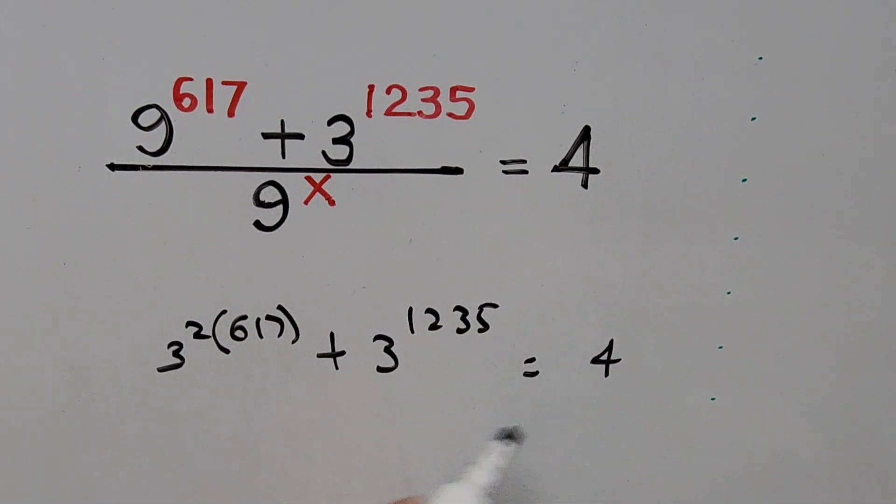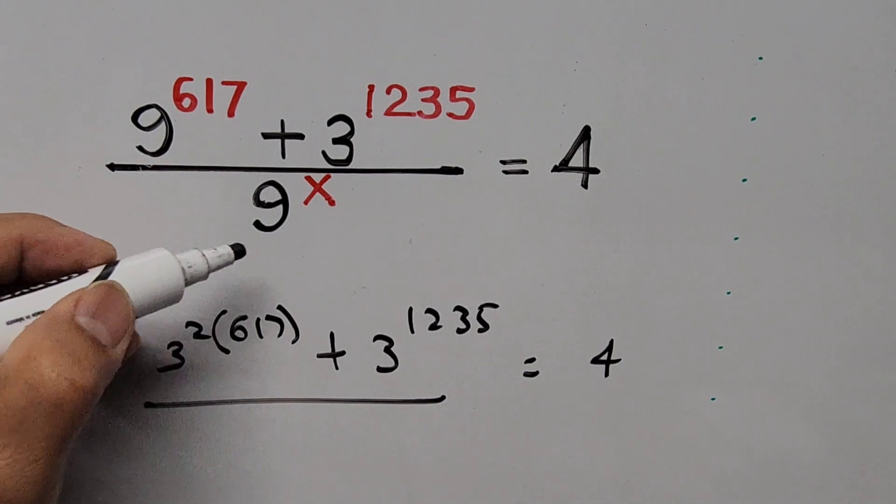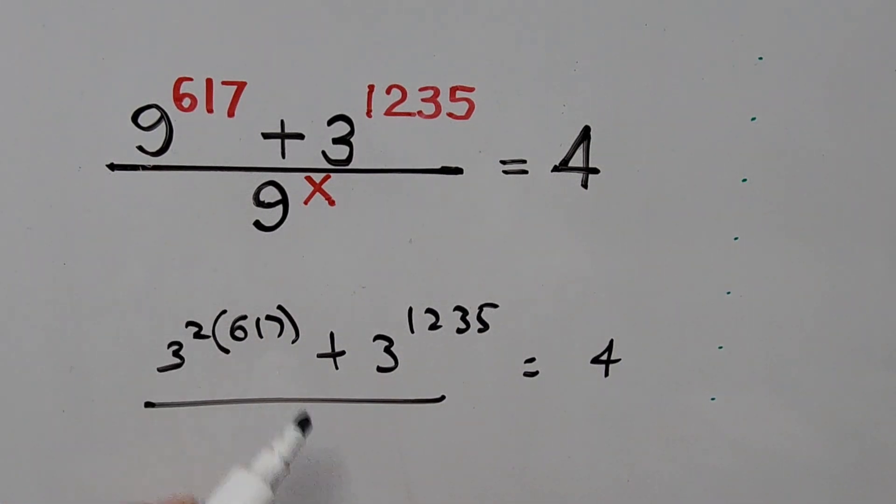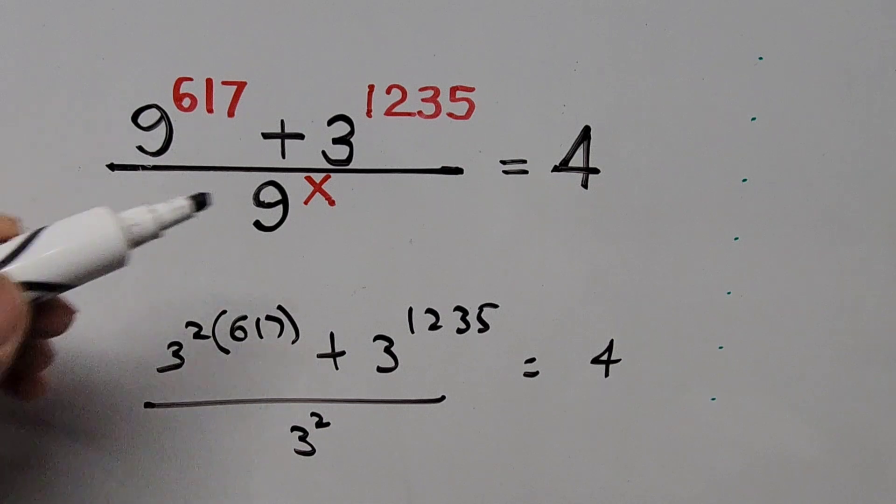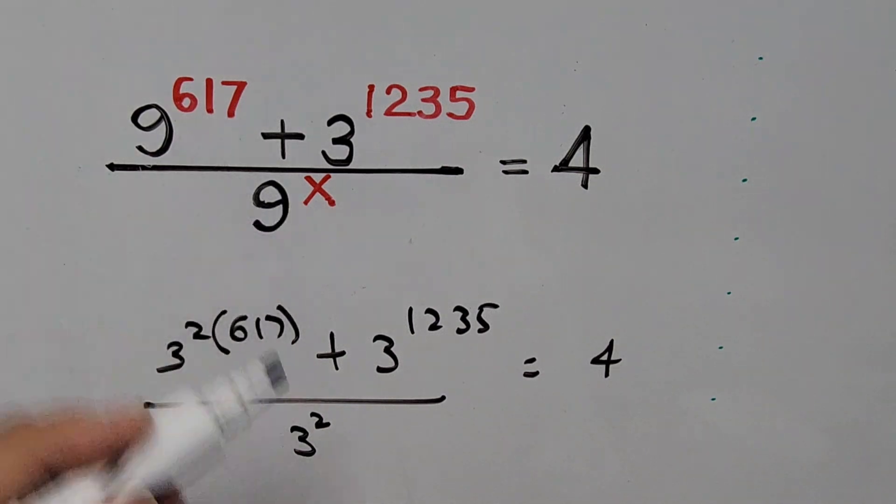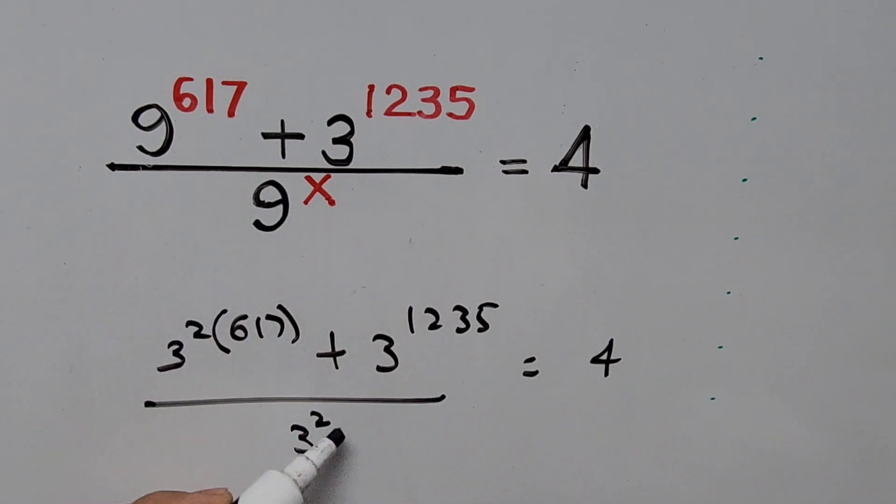And that's equal to 4, and this is divided by converting base 9 to base 3. So that is 3 squared multiplied by existing exponents. So that's times x, so that's 2x.